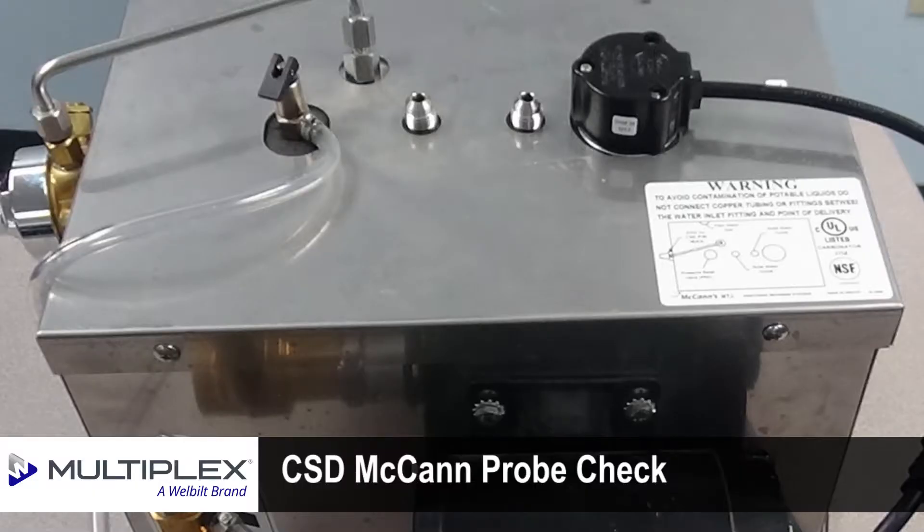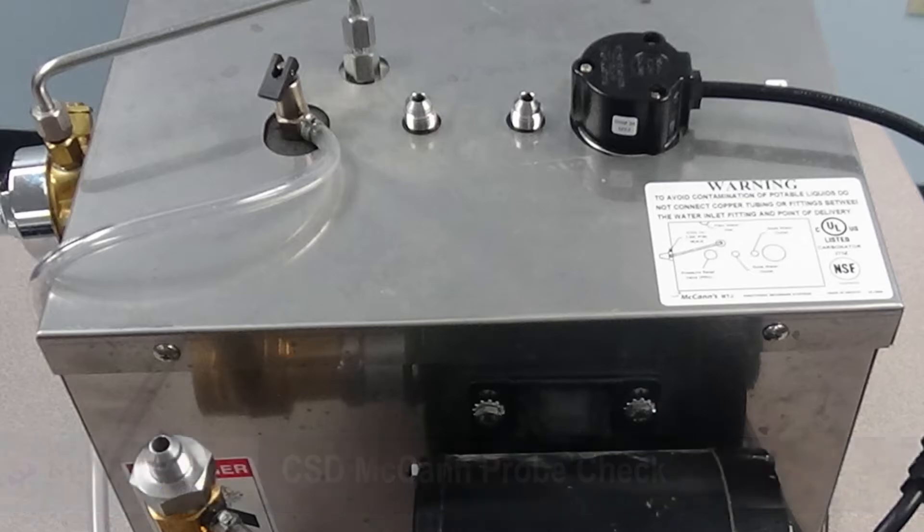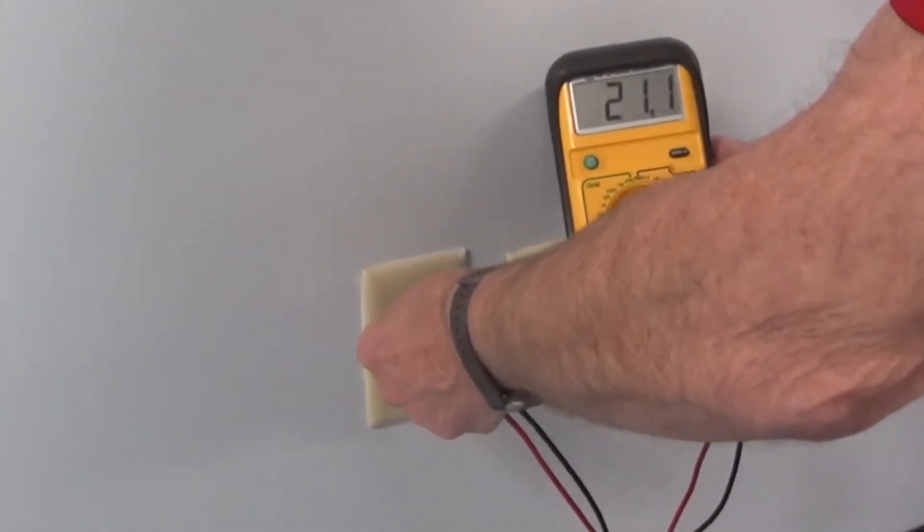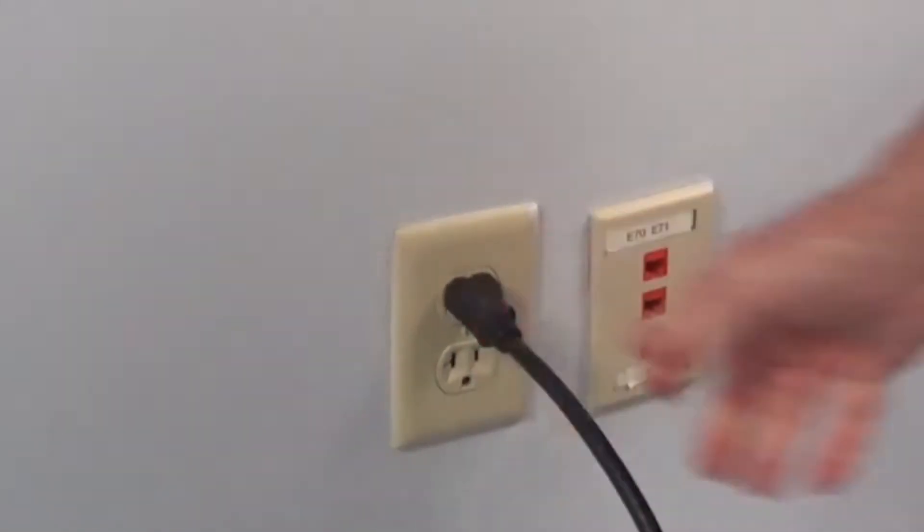Today we're going to check the probe and the float on a McCann's carbonator. Take your meter and check power at the outlet. Make sure the carbonator is plugged in.